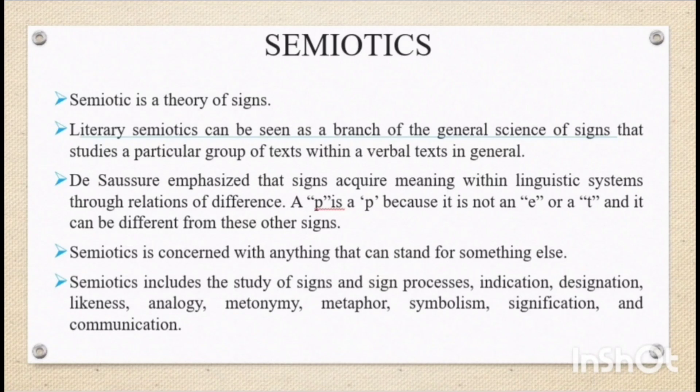Semiotics is a theory of signs. Literary semiotics can be seen as a branch of the general science of signs that studies a particular group of texts within a verbal text in general. De Saussure emphasizes that signs acquire meaning within linguistic systems through relations of difference.